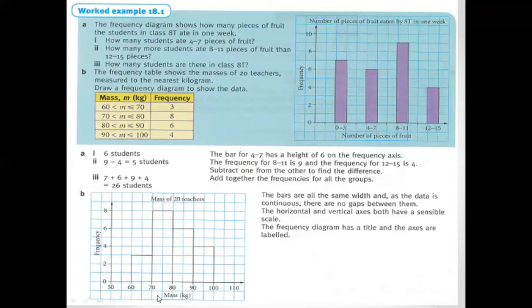So with the help of this, I just start. I write here the mass, start from 50, 60, 70, 80, 90, 100, 110. And the number of teachers, so maximum number is 8, so we need a maximum 8 number, and minimum number should be 3. So we will start from 0, always start from 0.